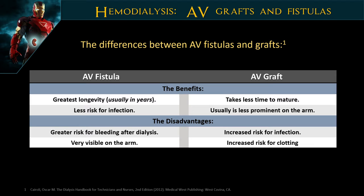The AV fistula has the greatest longevity — it can be used for many years because it's all natural, with less chance of infection. However it has a greater risk of bleeding after dialysis and is very visible in the arm. The AV graft takes less time to mature and is less prominent in the arm, but has a slightly higher risk of infection and an increased risk of clotting because it's artificial tubing. Both have advantages and disadvantages. Most patients don't know which one they have — they just know they have a shunt.